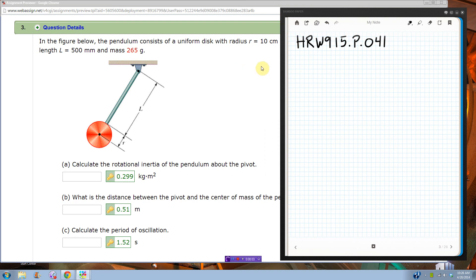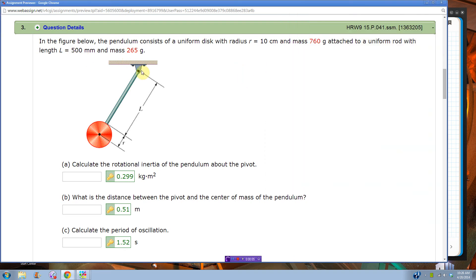This is HRW915P041. It says in the figure below, the pendulum consists of a uniform disc that gives us the radius and the mass of that attached to a uniform rod with a certain length and a certain mass. Calculate the rotational inertia of the pendulum about the pivot.